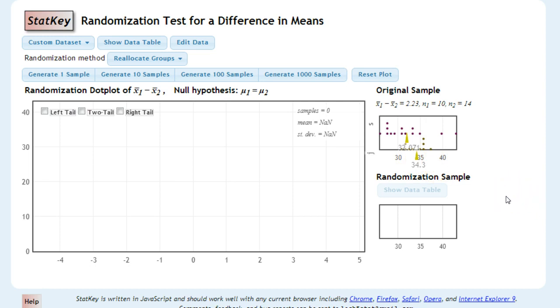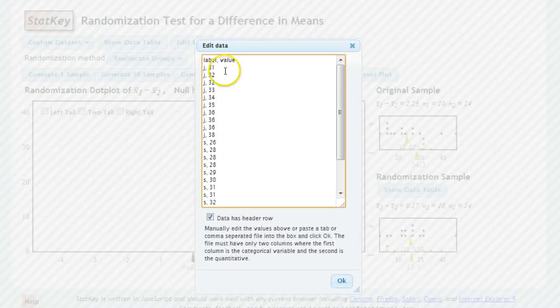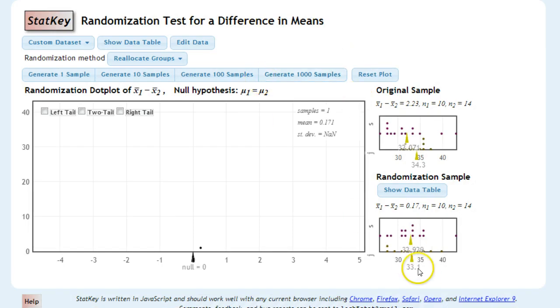Now, the way that it does a randomization test is it pretends that all of these numbers don't belong to any particular group. It doesn't belong to the juniors. It doesn't belong to the seniors. And so, if I generate one sample, what it's going to do is it's going to mix those up. So, it's going to mix up the J's and S's and randomly reassign them to the different numbers. And by doing so, we should, in theory, have a difference of zero on average. And sometimes it will be a little higher because it's random and sometimes it will be a little bit lower.